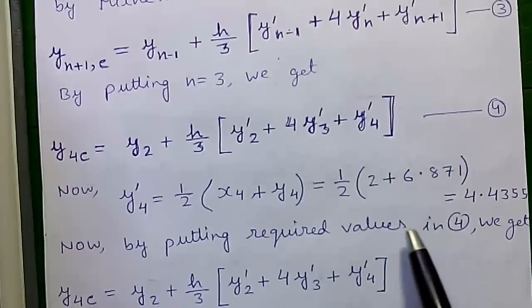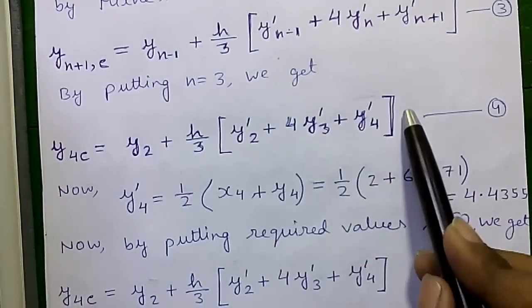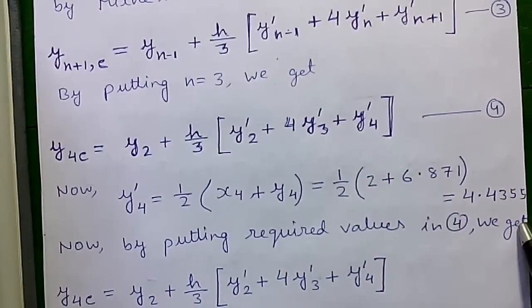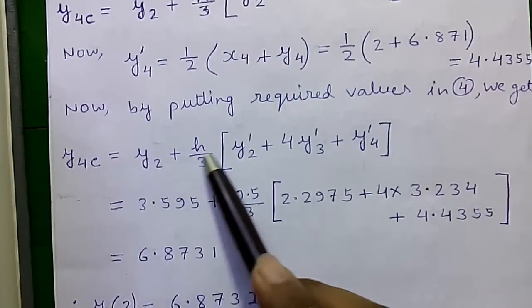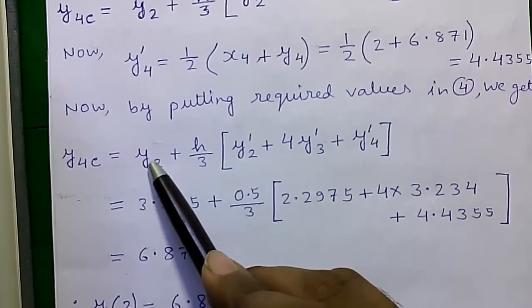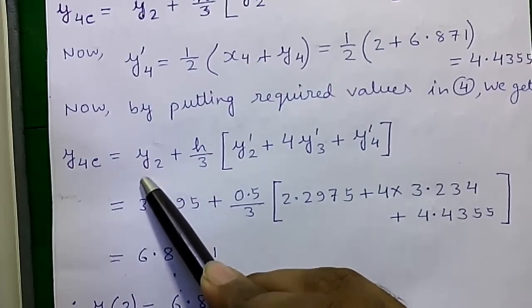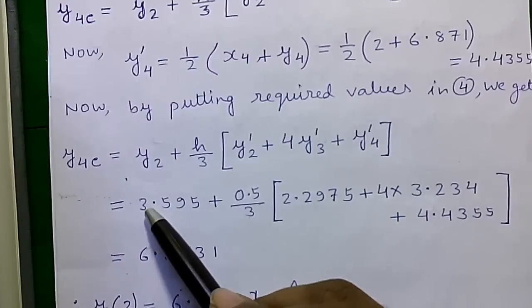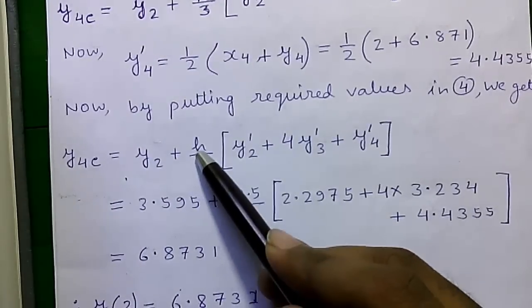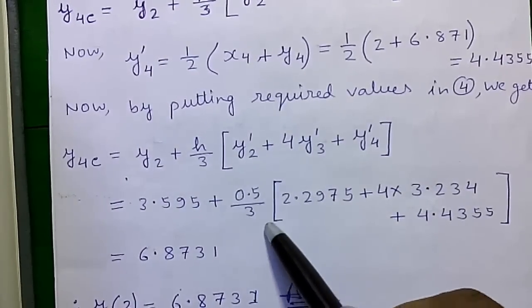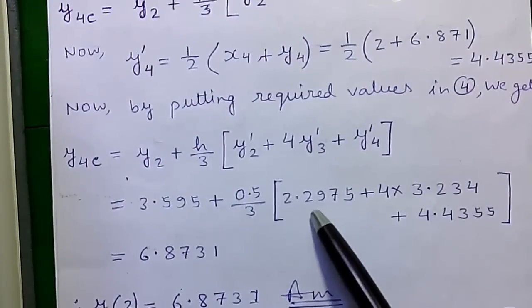Now by putting required values in our corrector formula that is formula number 4 we will get this is our formula. We will put the values y(2). Remember this is not y'(2), this is y(2). So that is 3.595 plus h is 0.5 divided by 3 times y'(2) value.